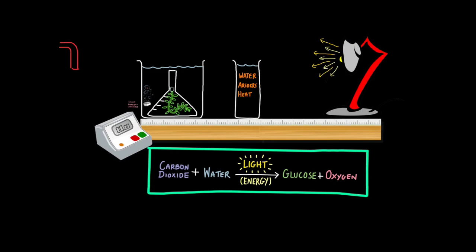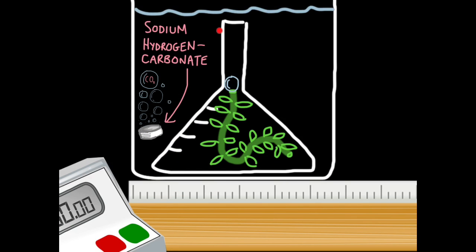You can investigate limiting factors really easily in a lab. Here, I'm investigating light intensity. What I've got is an aquatic plant such as Canadian pondweed and I've submerged it under water in a beaker. The reason why we need an aquatic plant is so when it produces oxygen through the process of photosynthesis, we can see the bubbles being produced. The more oxygen bubbles that are being produced, the faster the rate of photosynthesis. So for this experiment, you need a long ruler like a meter ruler, you need a stop clock, you need something in the water to make sure that carbon dioxide levels aren't the limiting factor. Remember, you want light intensity to be the only limiting factor in this experiment. So you must control all others.